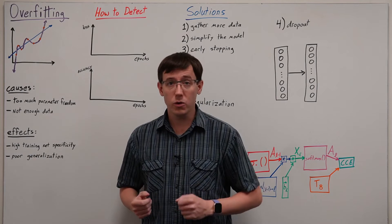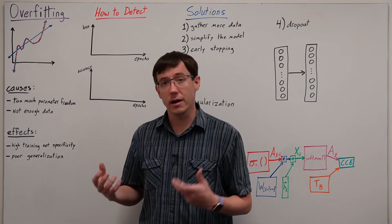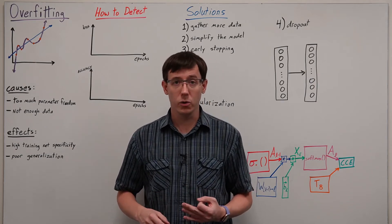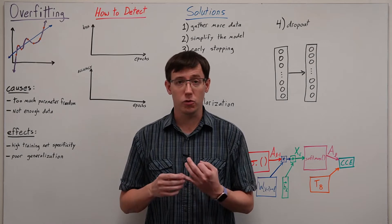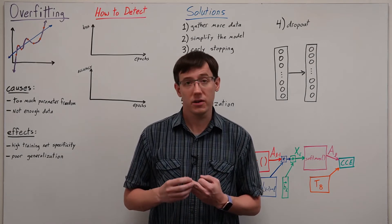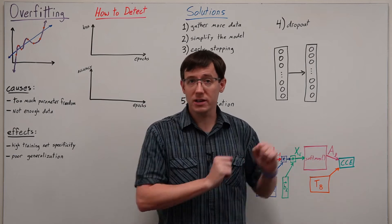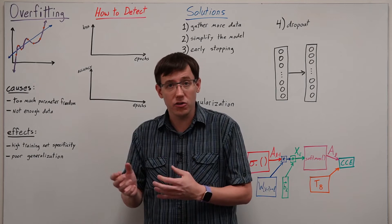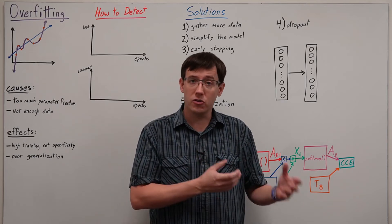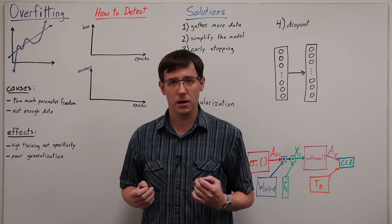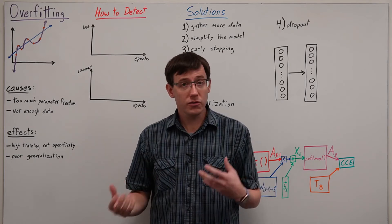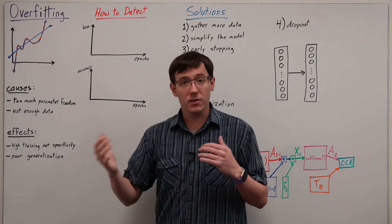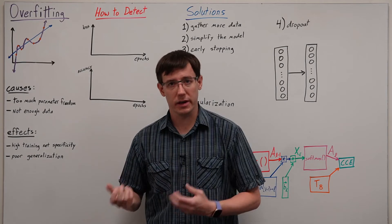And the number one way to identify overfitting is by keeping an eye on the validation set. This is the primary reason why we tend to split our data set three ways into training, validation, and testing sets. So that while holding out a test set for later, we can, during training, look at the validation set to assess whether the network can generalize or whether it's overfit to the training data. The sorts of symptoms we're looking for are when the loss or the accuracy gets out of line between the training set and the validation set.